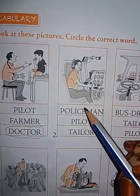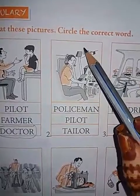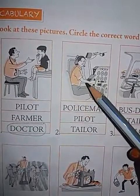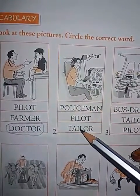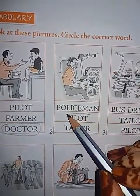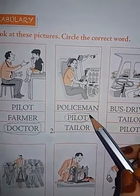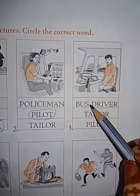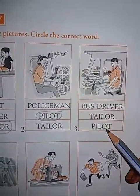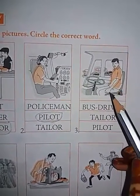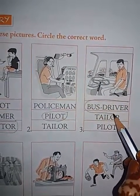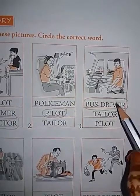Next, let us see the second picture. What is this man doing here? Who is he? Is he policeman, pilot or tailor? Yes, very good. He is a pilot. He drives a plane. Alright, next. Who is he? Bus driver, tailor or pilot? The one who drives a bus is called? Bus driver. Very good. B-U-S, bus, D-R-I-V-E-R, driver. Bus driver.